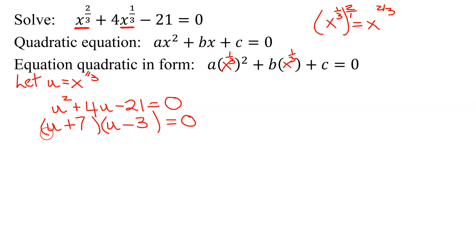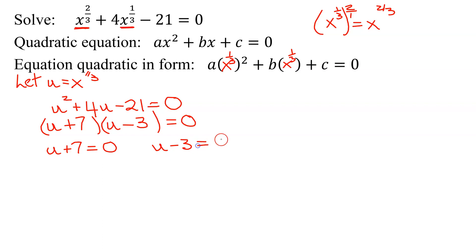So now, two factors multiplied together equal zero — set each of them equal to zero. So u plus 7 equals 0 and u minus 3 equals 0. Simple linear equations: subtract 7 from both sides, u equals negative 7. For the second one, add 3 to both sides, u equals positive 3.